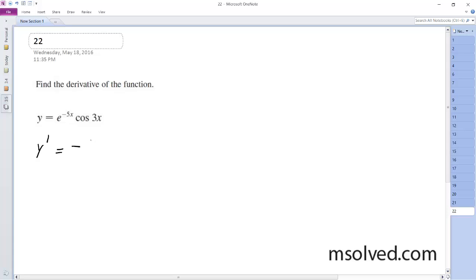Bringing down negative 5x, that just becomes negative 5, e raised to the negative 5x, cosine of 3x, plus e raised to the negative 5x. Derivative of what's on the inside is 3, and then derivative of the cosine is negative sine 3x.